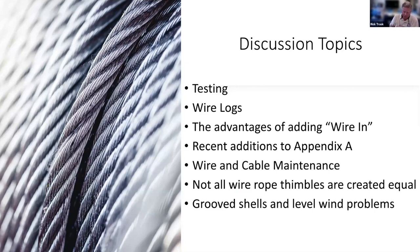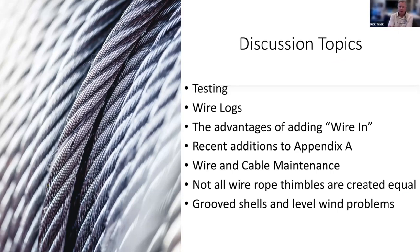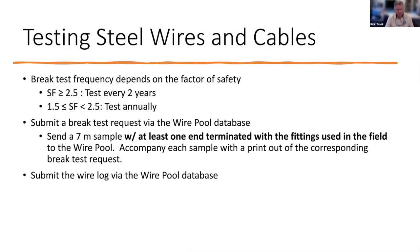The thought is that I've pulled a couple of things to talk about that don't always go as we think they should, and in some cases I've got suggestions on ways that might help going forward. We're going to talk about some testing, wire logs, possibly some advantages of using what I'm referring to as wire in, a brief cover of some recent additions to Appendix A wire and cable maintenance, pictures showing that not all thimbles are created equal, and a little bit about grooved shells and level wind problems.